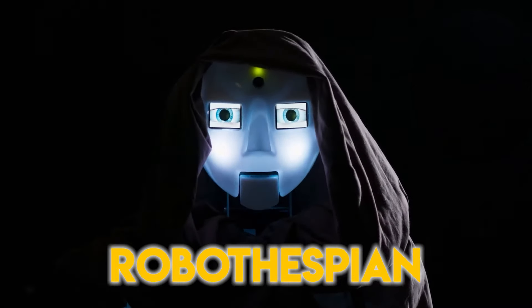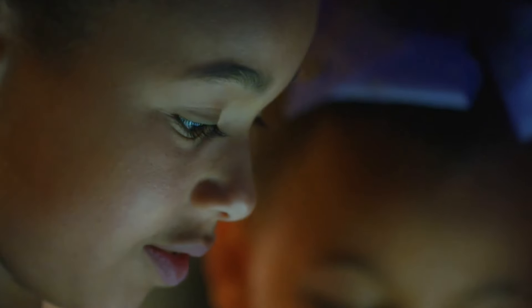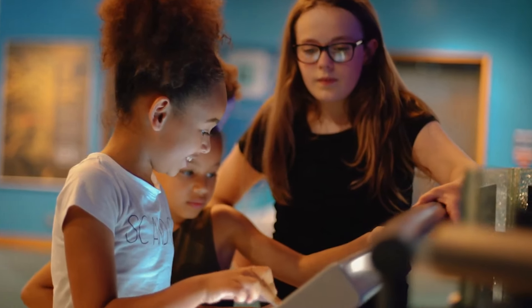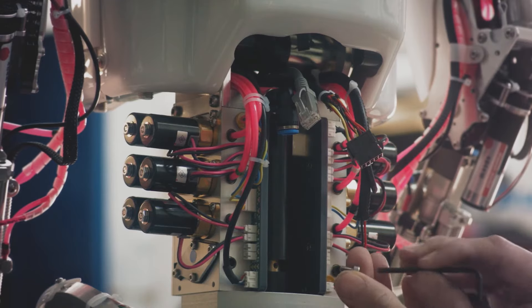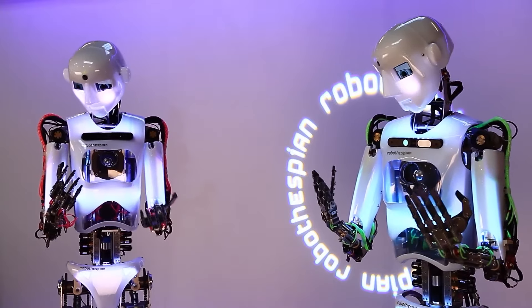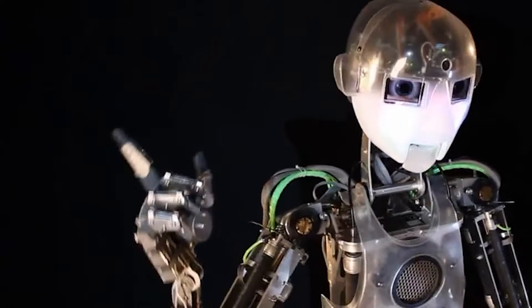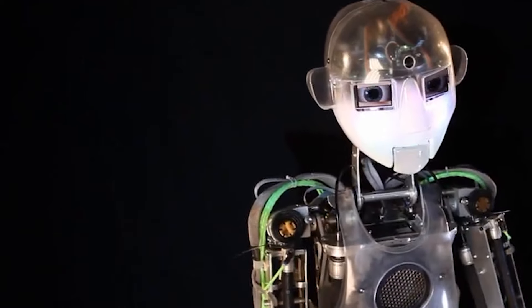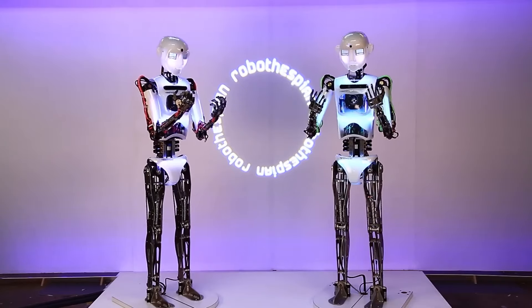If you've ever wanted to act alongside a robot, then Robothespian is here to make your dreams come true. Made by Engineered Arts, this big humanoid robot is hidden in museums and places where people go for fun. But Robothespian isn't just a robot standing there, it's more like an actor. It can move its arms and make facial expressions, which helps it tell stories and interact with people. Plus it can speak different languages so it can entertain people from all over the world.